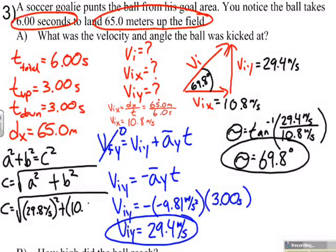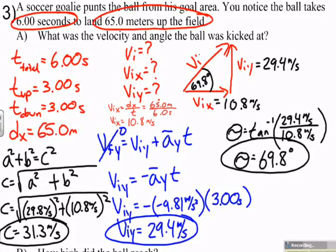I plug in my legs of my right triangle as 29.8 meters per second and 10.8 meters per second, and crunching these numbers in the calculator, I figure out that my initial launch speed was 31.3 meters per second.